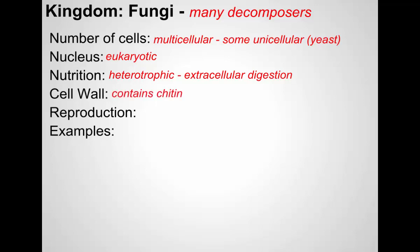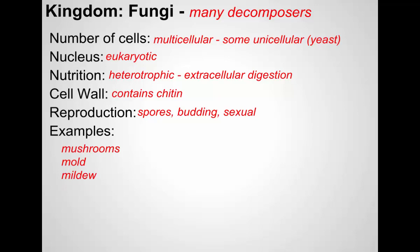They have a cell wall containing chitin — another molecule present in various types of living things, but different from cellulose. They reproduce using spores, through budding, and they can reproduce sexually through the exchange of genetic material. Some examples: mushrooms are a fungus, mold is a fungus, mildew is a fungus, and yeast used for baking and brewing is a fungus.